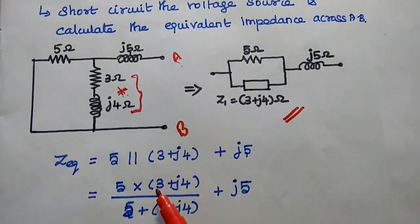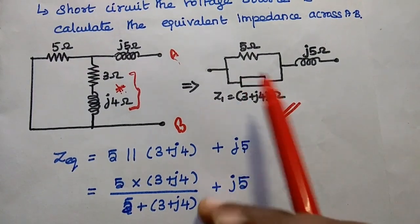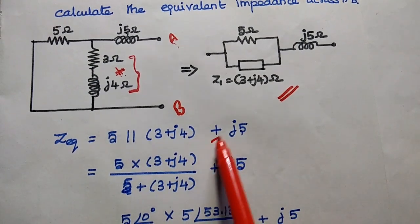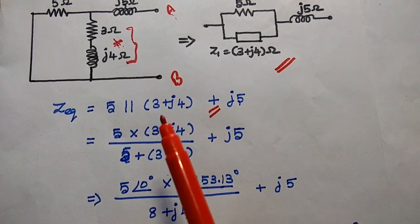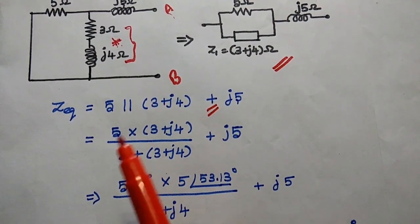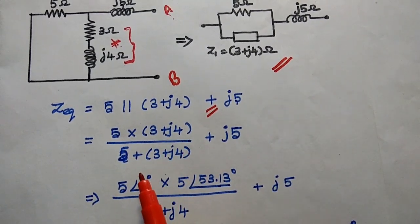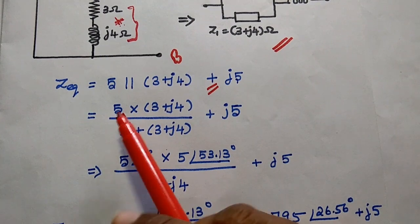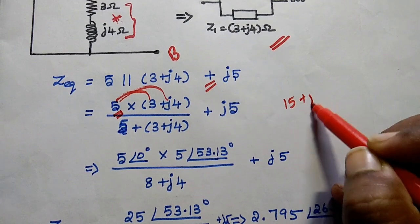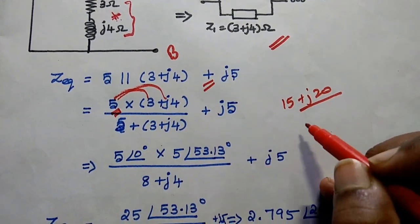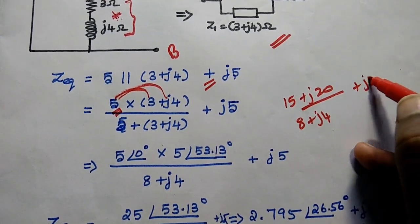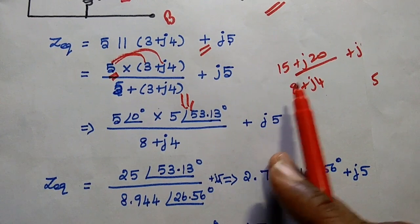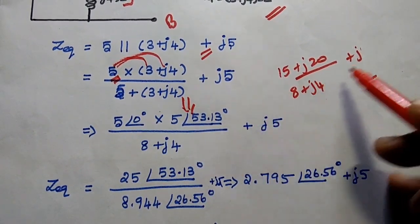The equivalent impedance is expressed as: 5 in parallel with (3 plus J4), plus J5. The parallel combination 5 in parallel with (3 plus J4) can be written as [5 into (3 plus J4)] divided by [5 plus 3 plus J4], which simplifies to (15 plus J20) divided by (8 plus J4), and then we add J5.